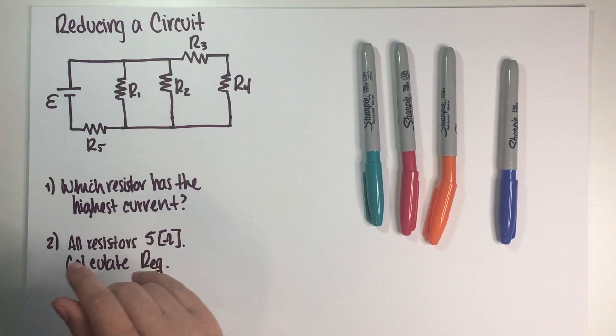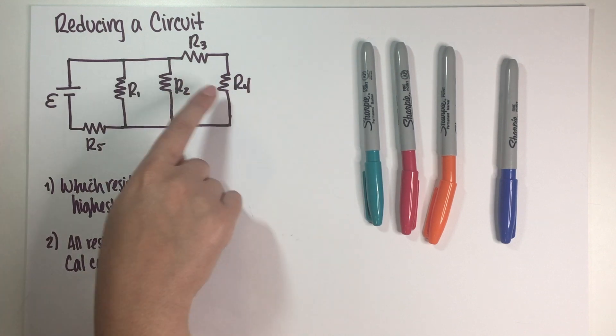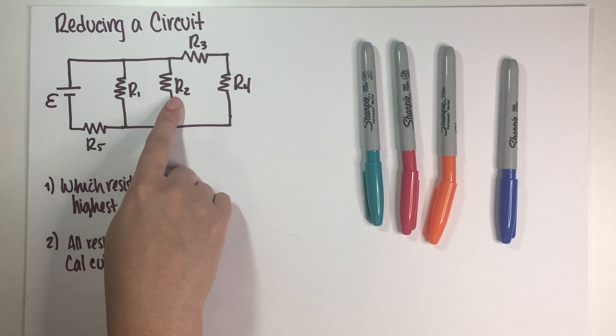As you can see, I have a drawing of a circuit over here. These are the five resistors, and the first thing we have to do is figure out which resistor has the largest current.